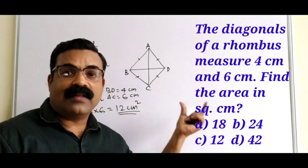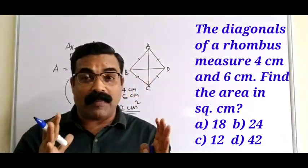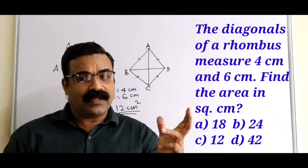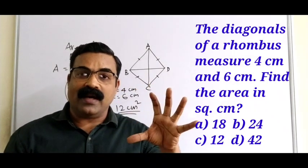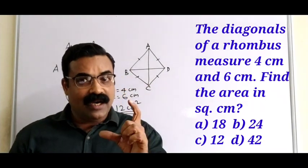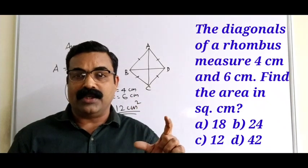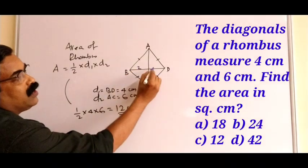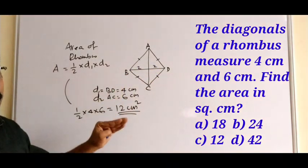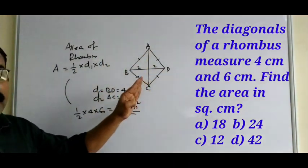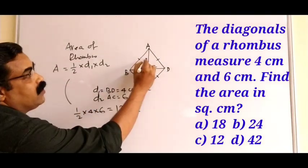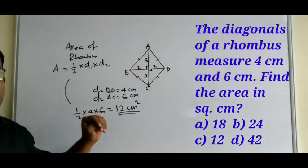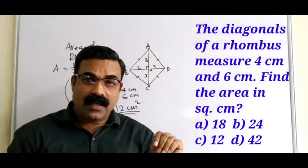From the given options you can mark the correct option. Understand the properties of a rhombus — these types of questions are repeated in the IBPS exam. The area formula is half × diagonal one × diagonal two. Also note: the diagonals bisect each other equally, so BD = 4 cm gives 2 cm on each side, and AC = 6 cm gives 3 cm on each side, forming a right-angled triangle since the diagonals meet at 90 degrees.